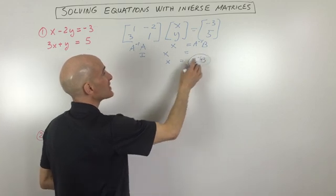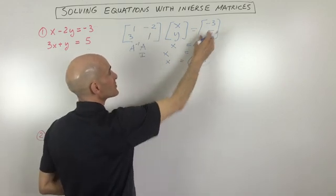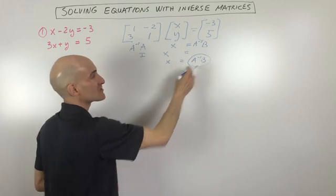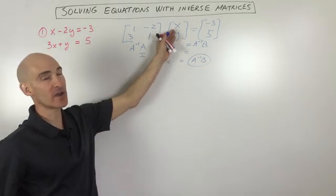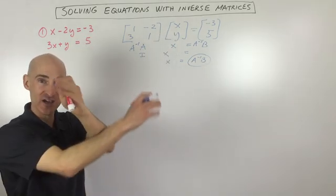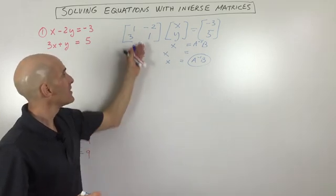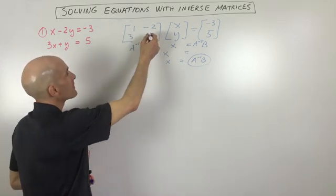So all we have to do is take the inverse of this matrix times our solution matrix, A inverse times B. That'll give us our variable matrix, and that'll be the point of intersection for our two lines. So we'll have solved the system. So what's the inverse of this matrix?